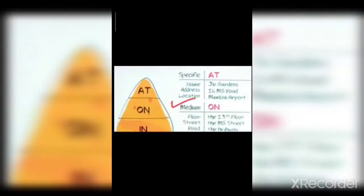जब आपको पूरी बहुत बड़ी area की बात की जाए — पूरी country, state, capital, या city given हो — तब आप 'in' use करेंगे। जैसे: most of the heroes live in Bombay. अब 'at' को अच्छे से समझते हैं — 'at' किसी जगह के name, address, और location के लिए use की जाती है। 'On' तब use होता है जब बहुत बड़े area में से एक छोटा सा area given हो।